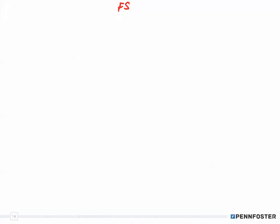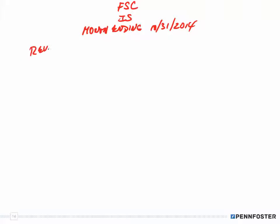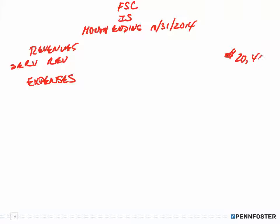So it's Five-Star Catering Inc. — this is an income statement, and we have to have the heading date, which is for a period of time: for the month ending October 31st, 2014. I put revenues and expenses as my categories. I only have one revenue account, so it's service revenue, with a dollar sign because it's the first number in the column — that's $20,400. Then I list all the expenses: salaries expense, rent expense.